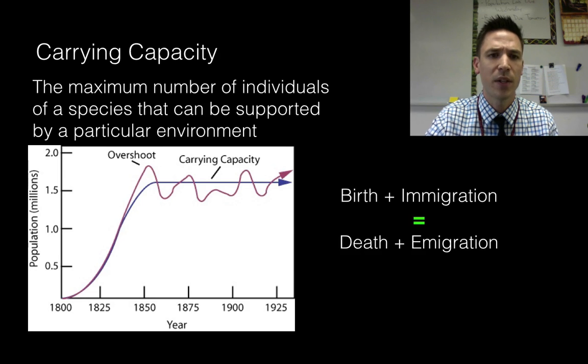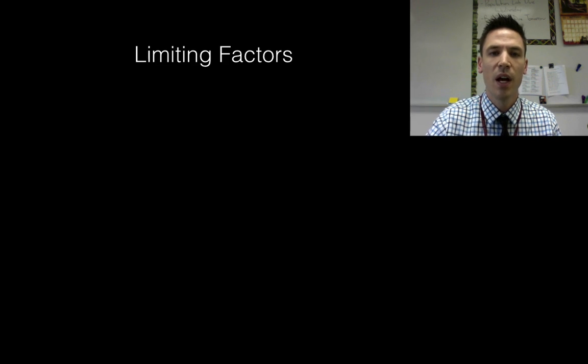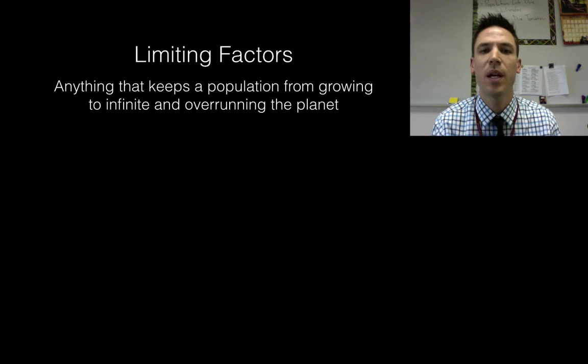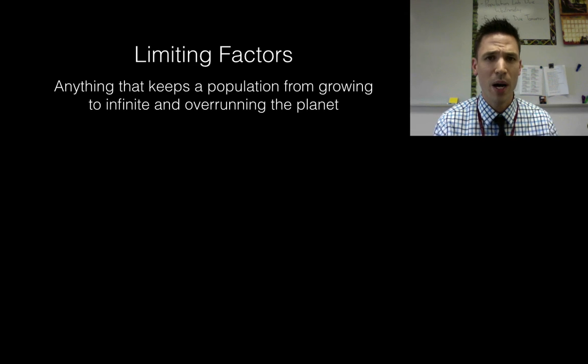So what sort of things set the carrying capacity? What is going to make my carrying capacity exist? Well we get a bunch of factors and we call these things limiting factors. A limiting factor is going to be anything that keeps a population from growing to infinity and overrunning the planet. In your mind think about what sorts of things stop a population from growing exponentially faster and faster to infinity. We'll break these things into two categories.